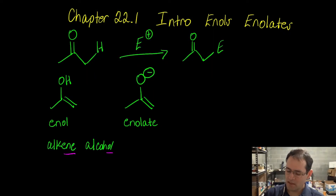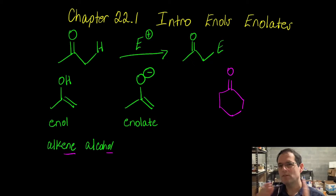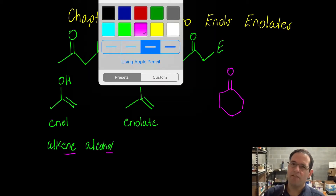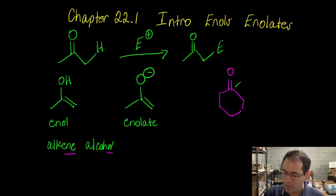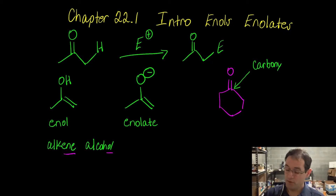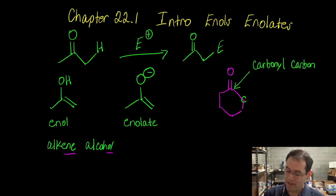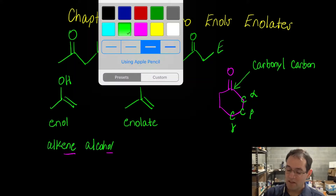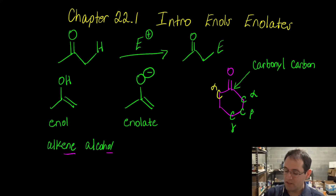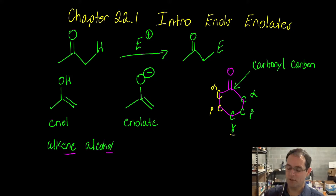When you have carbonyl-containing compounds, we label carbons away from the carbonyl based on the Greek alphabet — alpha, beta, and gamma. The carbon with the C=O is called the carbonyl carbon. One carbon out from that is the alpha carbon, the second carbon away is the beta carbon, and the third is gamma. Alpha carbons are the ones directly next to the carbonyl carbon.